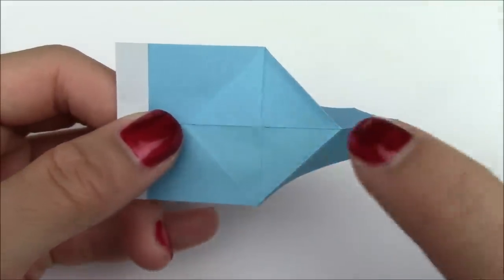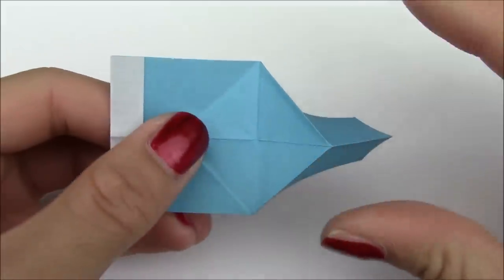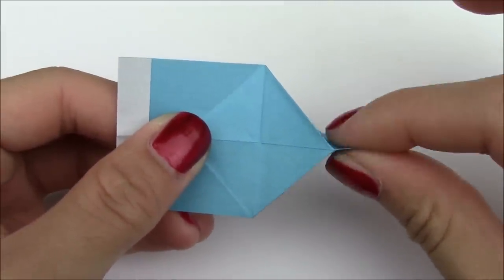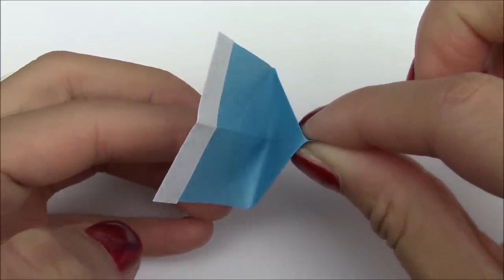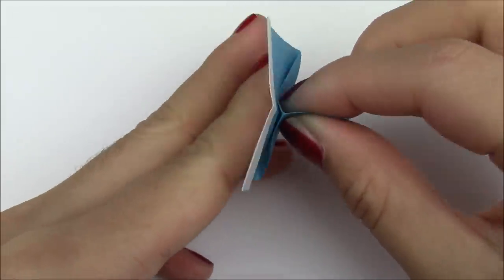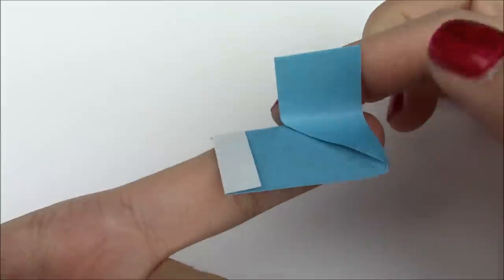Now what you want to do is you want to fold along this line right over here. So you're just going to fold upwards like this while holding this side down with your index and thumb. So just fold it down and fold it in half like this. So this is how it looks like from the top. And this is how it looks like from the side.